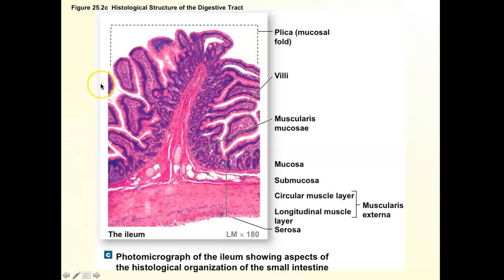Let's start with the big four. The first thing to look at is the mucosa, which is predominantly epithelial cells. Epithelial cells are very close together — that's what we learned. When you have nuclei so close together, the nucleus is what really picks up the stain, so you're going to have a very dark-staining layer. Epithelial cells will always be very dark, and they're always on the surface.